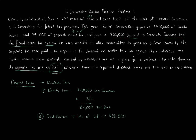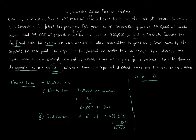Let's assume there is a preferential rate that applies under current law. Assume Coconut has a preferential rate of 20% on the $50,000 dividend, which means Coconut has to pay $10,000 at the individual level. So there's tax at the entity level and then a second level of tax at the individual shareholder level on the distribution — those are the two levels of tax.